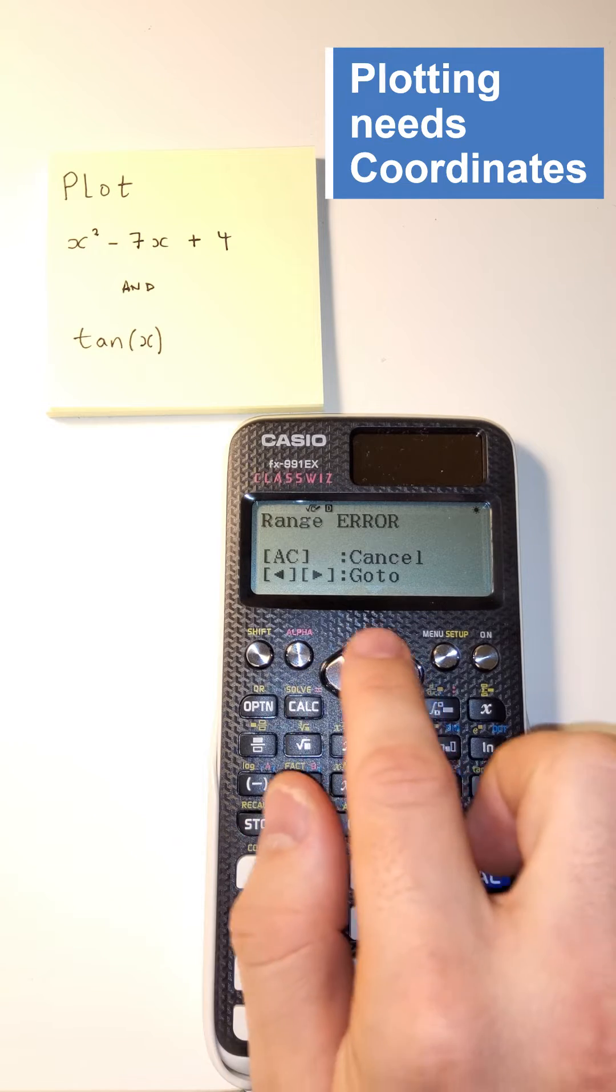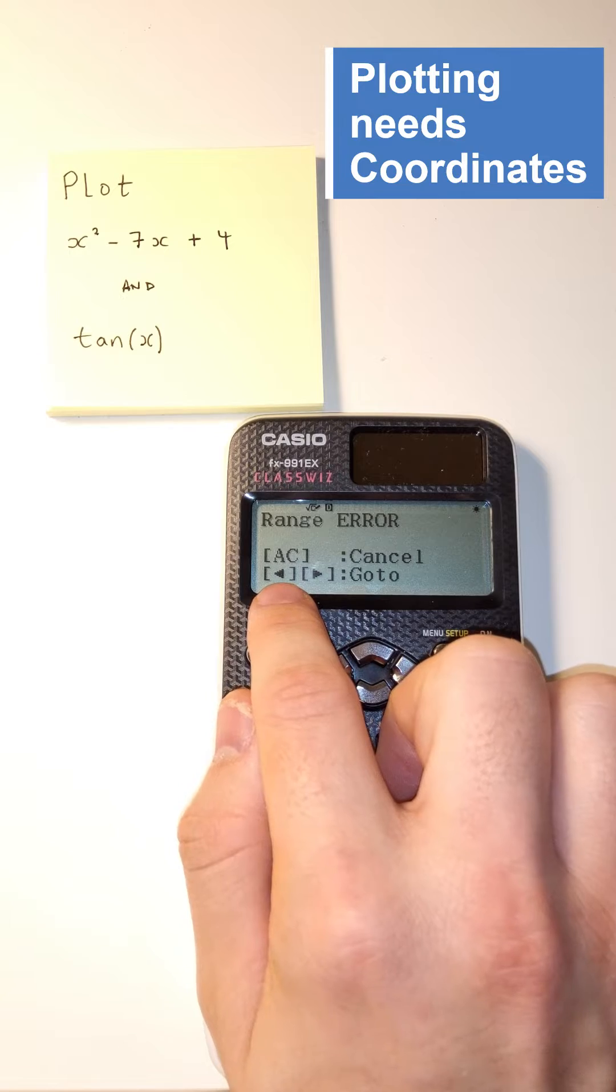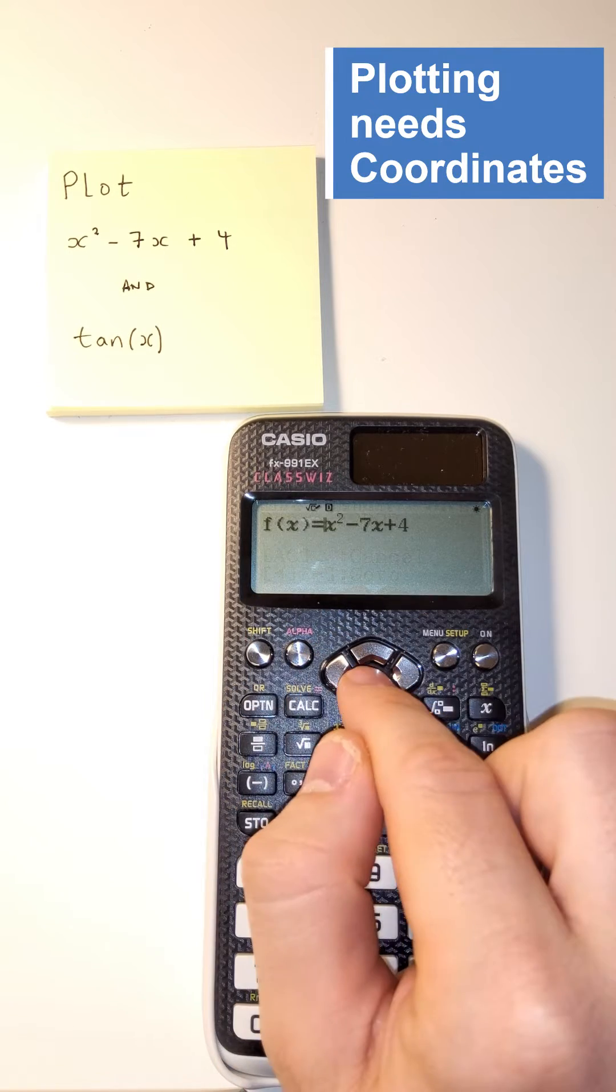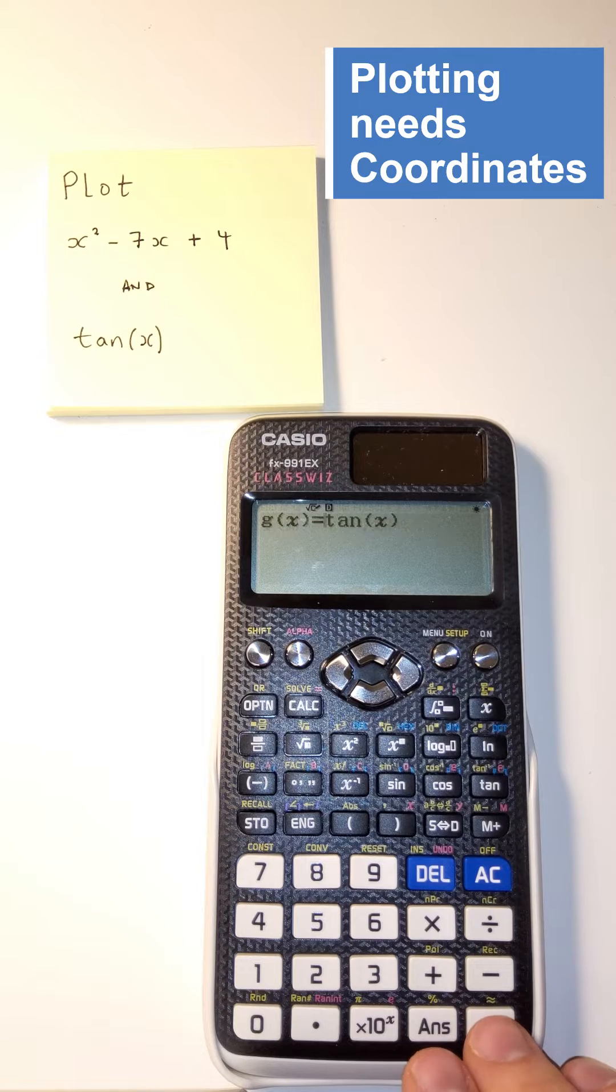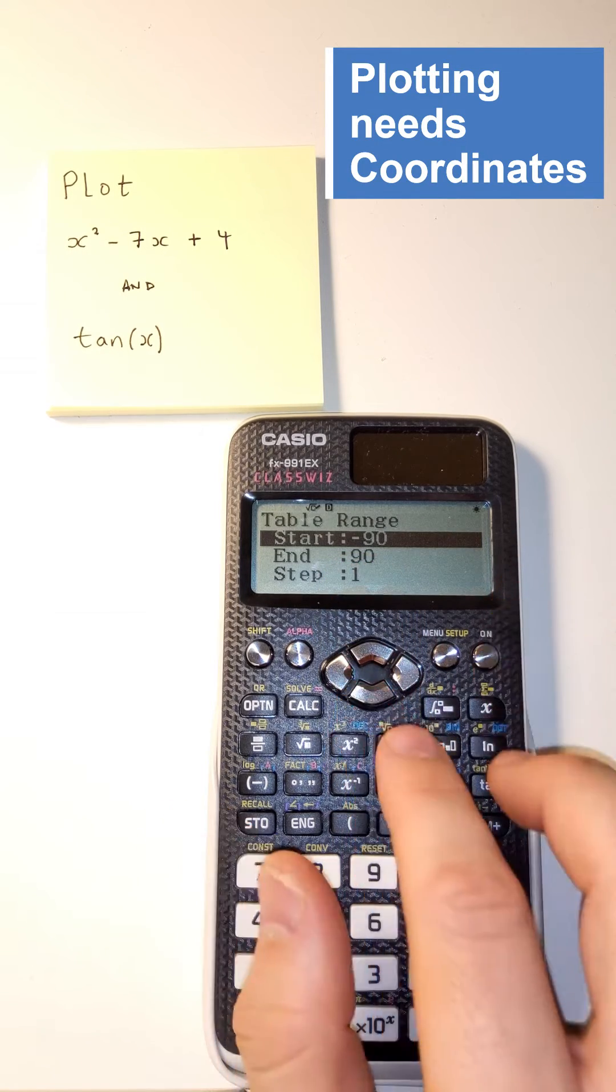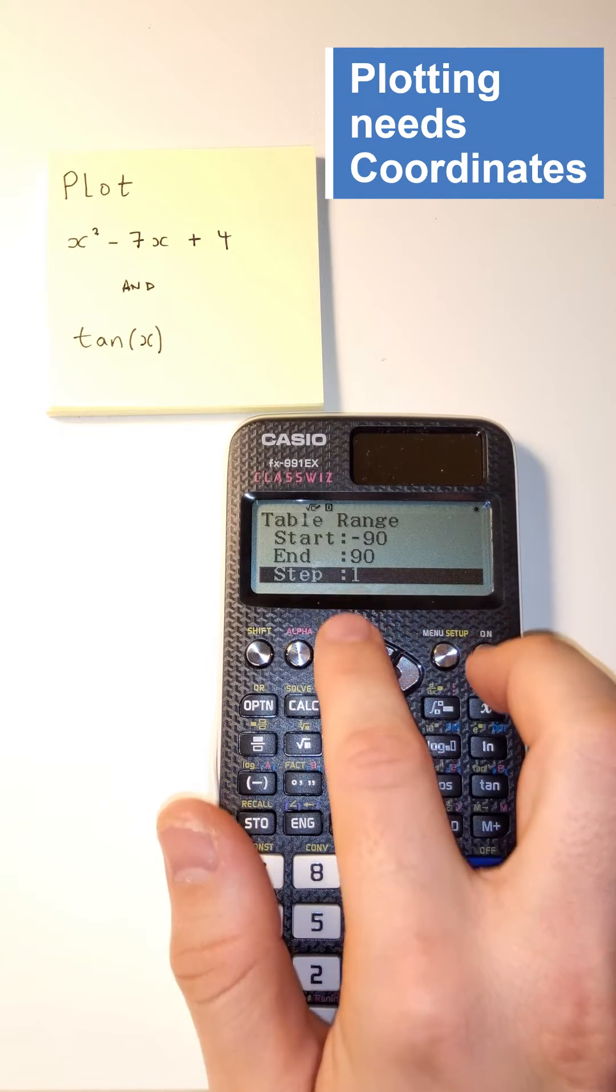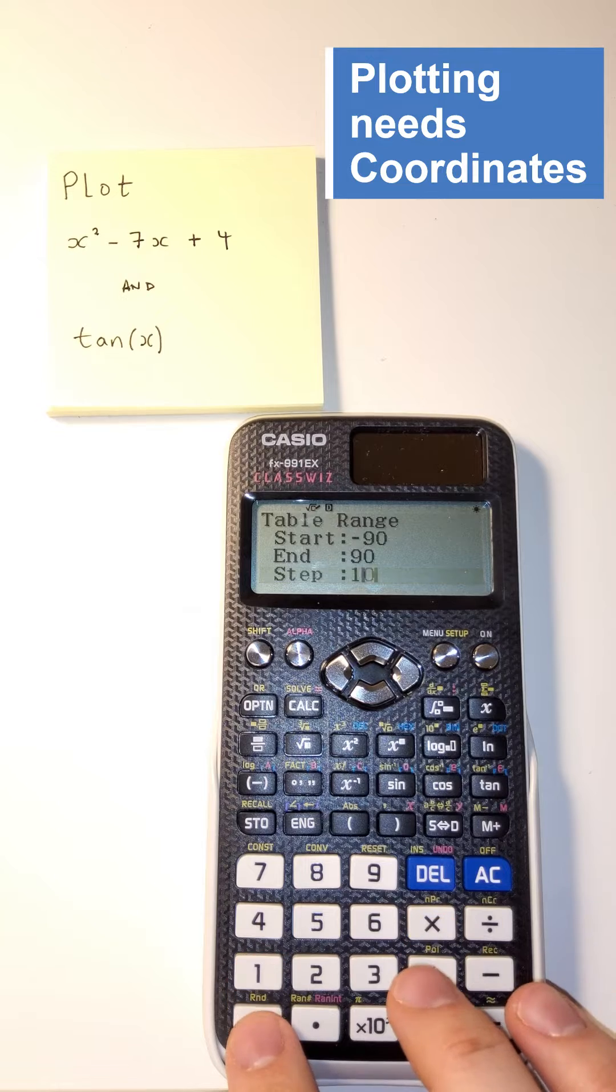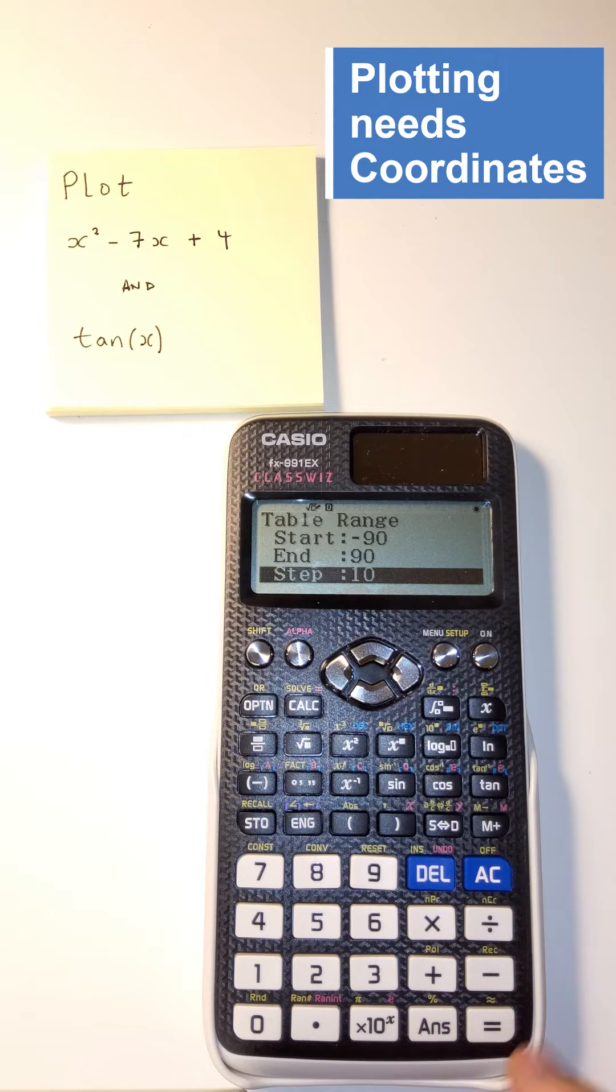Okay, it doesn't like it. If you ever get an error like this, you can go back, right? You can go to where the error was. That's not quite accurate, is it? That's not where the error was. The error was this: too much, too big, too powerful. We don't need to change these numbers, but we do want to change the steps. So a reasonable amount of steps, maybe 10 degrees. Let's see if it can handle that.